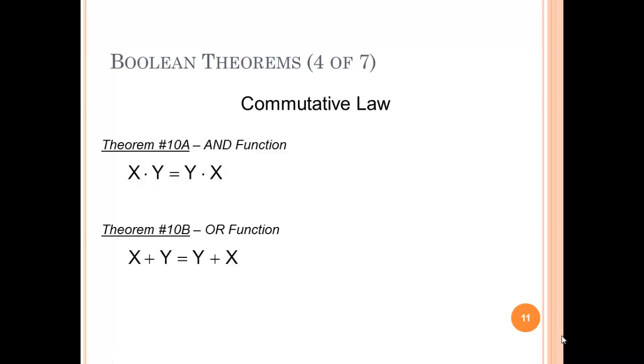Last week we dealt with single variable Boolean theorems and this week we're going to talk about multi-variable theorems. This is the commutative law and it just says that order doesn't matter. It doesn't matter whether you have X AND Y going into a gate or Y AND X, the output's going to be the same. And the same is true of an OR gate. X OR Y would be the same as Y OR X.